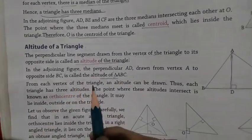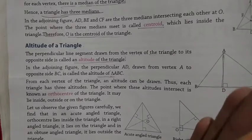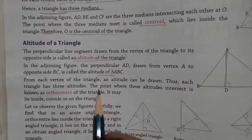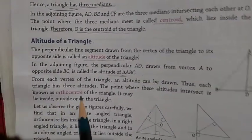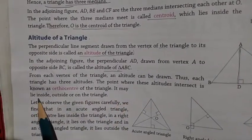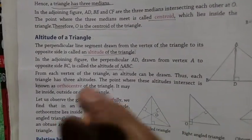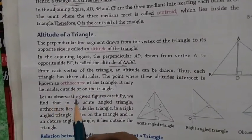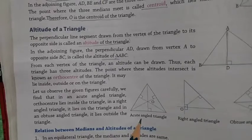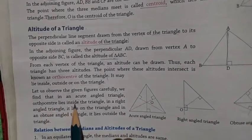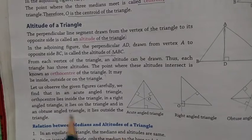From each vertex of the triangle an altitude can be drawn. Thus each triangle has three altitudes. The point where these altitudes intersect is known as the orthocentre of the triangle. In an acute-angled triangle, the orthocentre lies inside the triangle; in a right-angled triangle, it lies on the triangle.